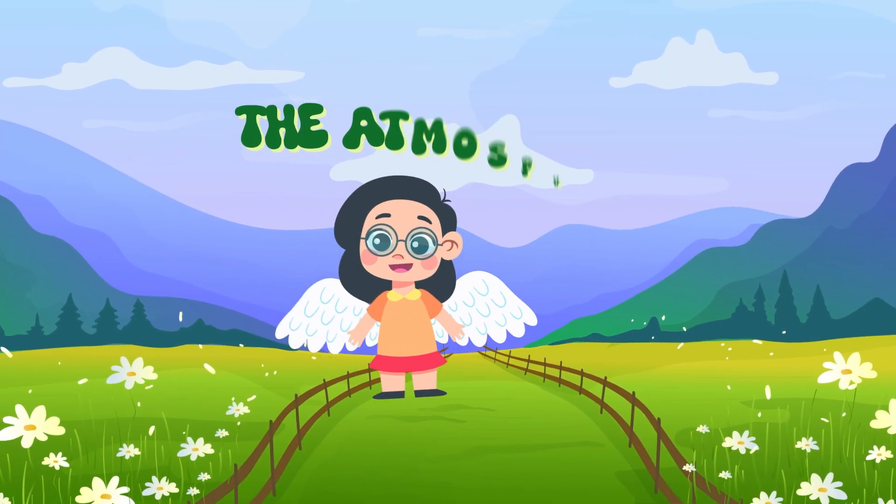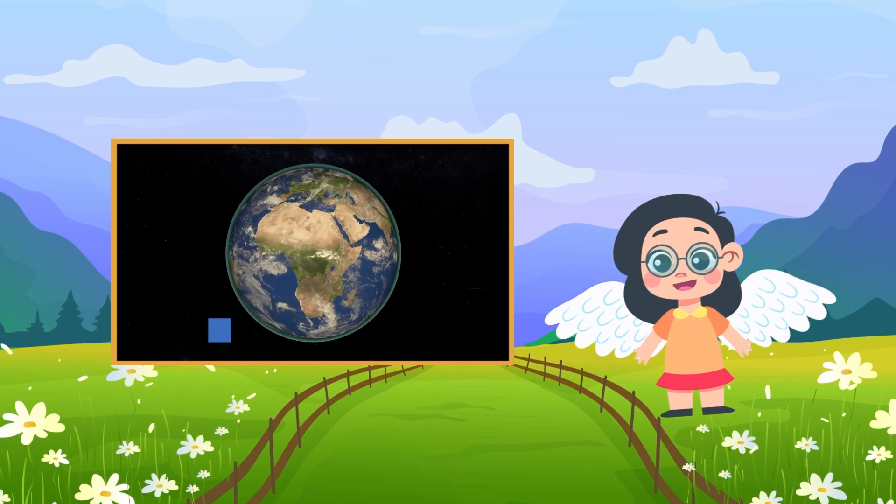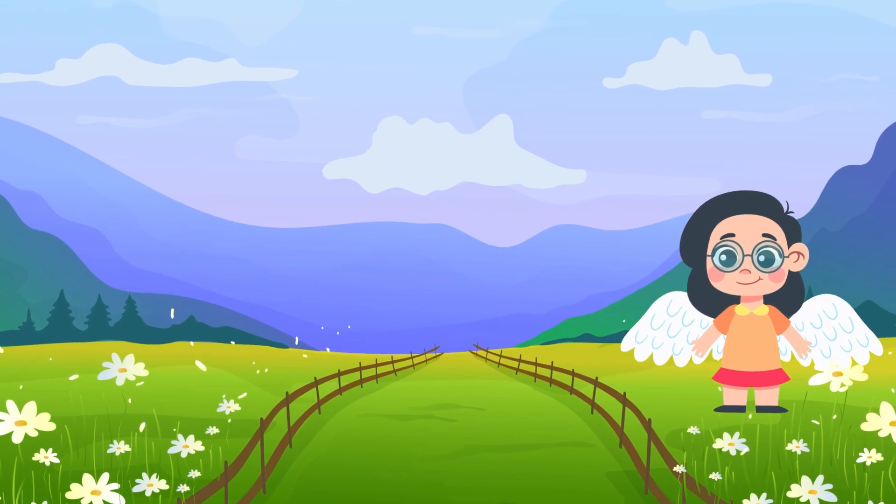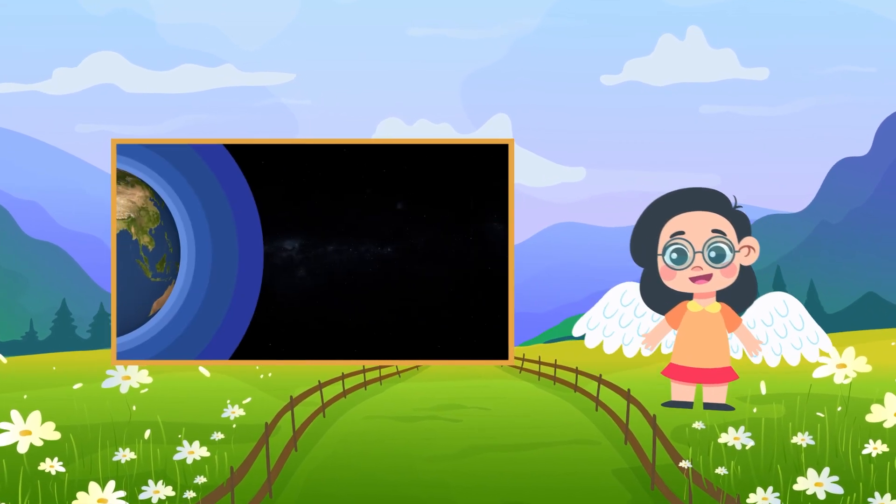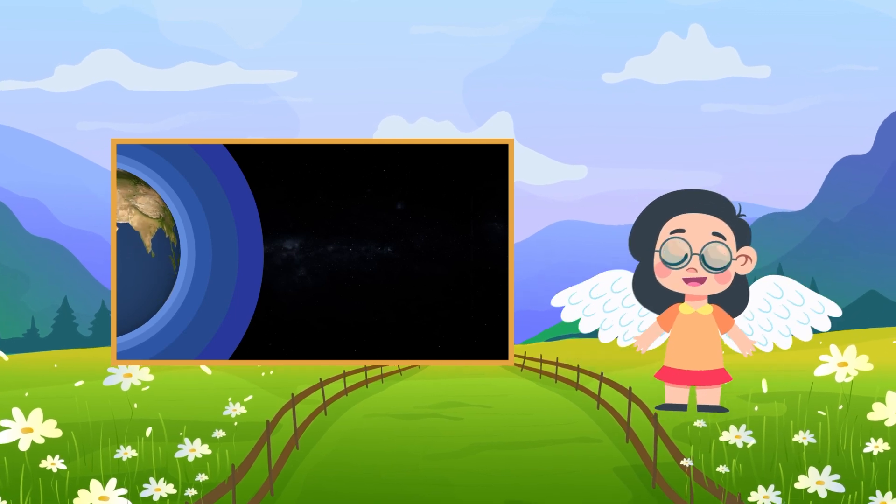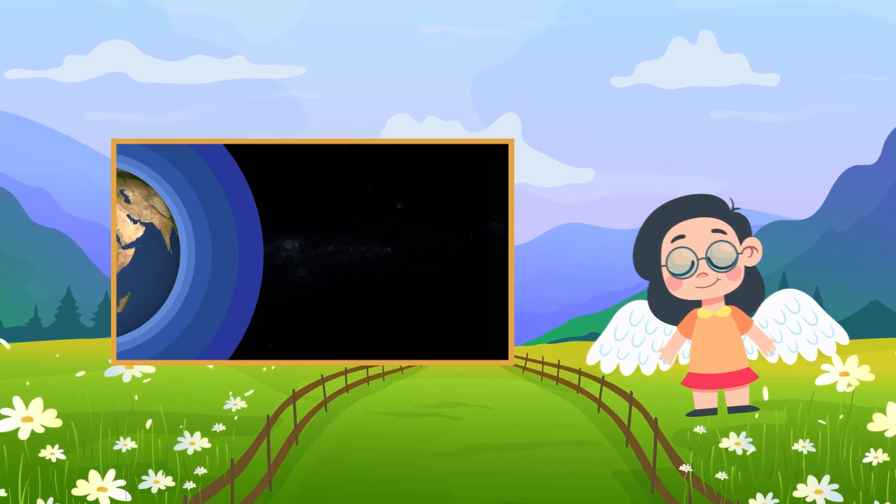The atmosphere. The earth is covered by a big invisible blanket called the atmosphere. It's made of tiny particles of air and gases like oxygen and nitrogen. These particles play a very important role in why the sky looks blue.